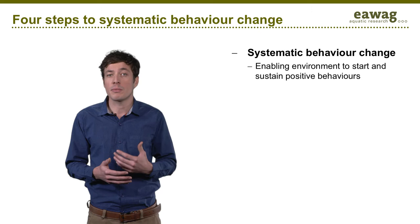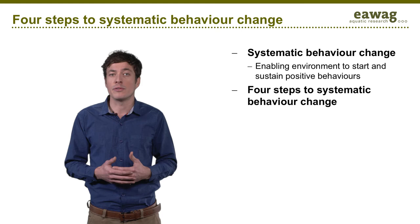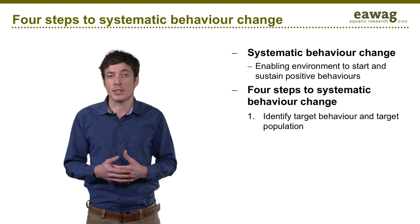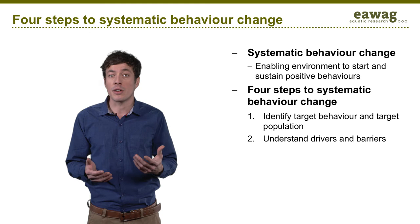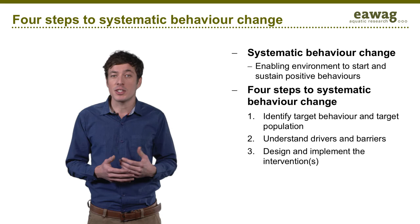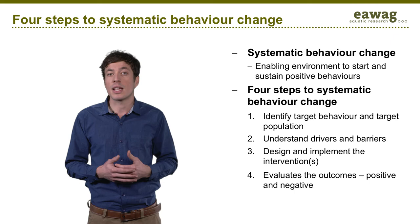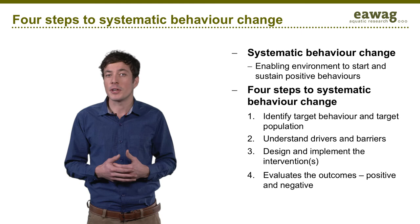To address the shortcomings of previous initiatives, new systematic behavior change methods were developed. These emphasize that behavior change is only effective if supported by an enabling environment. Generally, they are organized along four steps. Step 1 defines specific behaviors and who is to change. Step 2 is about understanding drivers and barriers to the target behavior. Step 3 is about the design and implementation of interventions which address these drivers and barriers. And finally, Step 4 is to check if the intervention is working. We will follow this logic and present some principles and tools for each step.